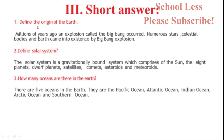Short answers. Define the origin of the Earth: Millions of years ago, an explosion called the Big Bang occurred. Numerous stars, celestial bodies and Earth came into existence by the Big Bang explosion. Define solar system: The solar system is a gravitationally bound system which comprises of the Sun, the eight planets, dwarf planets, satellites, comets, asteroids and meteoroids.